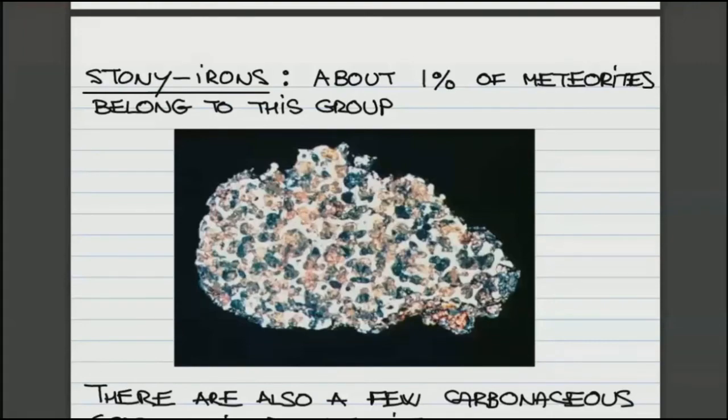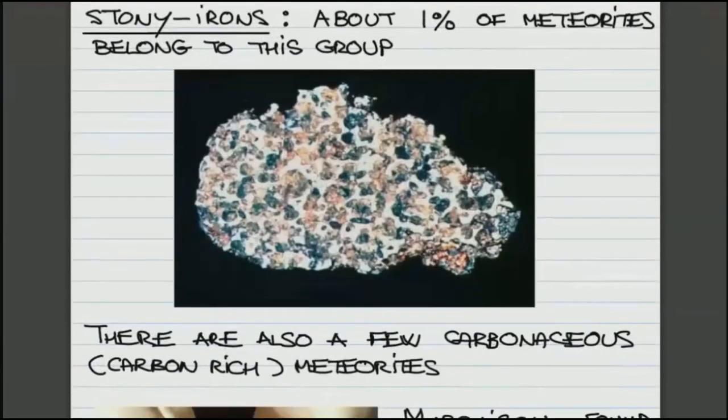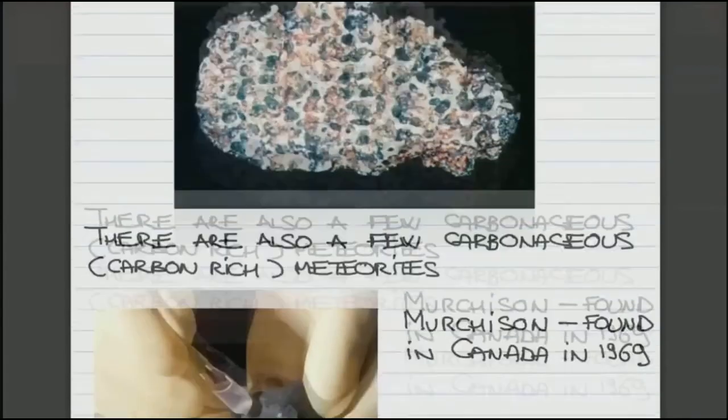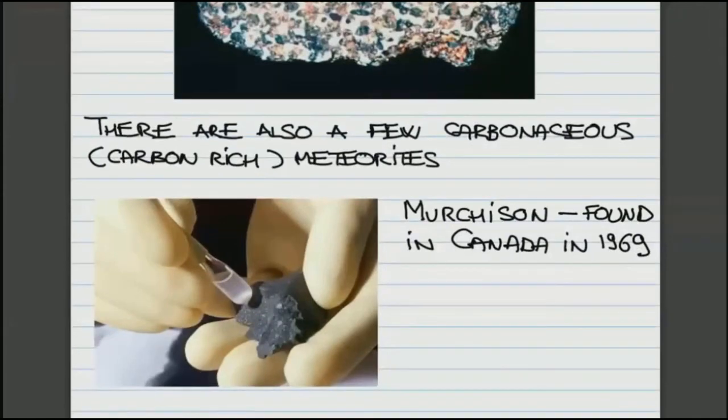There are also a few so-called carbonaceous or carbon-rich meteorites. One of them was actually found here in Canada in 1969. It's called Murchison, and there is another one found in, I believe, Mexico, Allende.